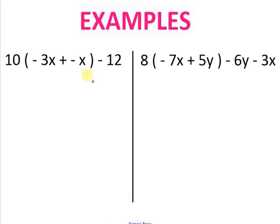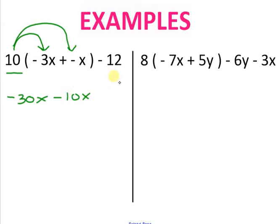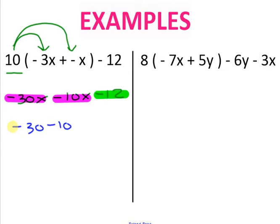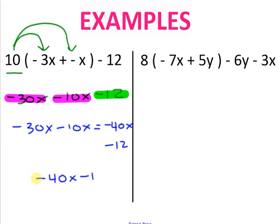Next problem: find your parentheses and your term outside. Distribute: 10 times negative 3x is negative 30x, and 10 times negative x is negative 10x. Bring down the rest of the problem. Finding like terms: negative 30x and negative 10x, and a negative 12 on its own. Negative 30x minus 10x equals negative 40x, and the negative 12 stays on its own. Final answer: negative 40x minus 12.